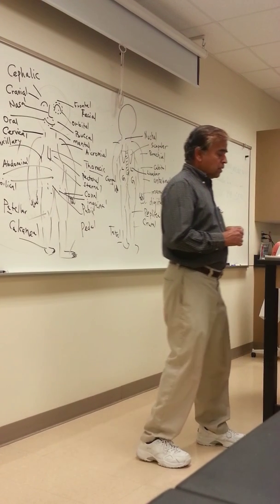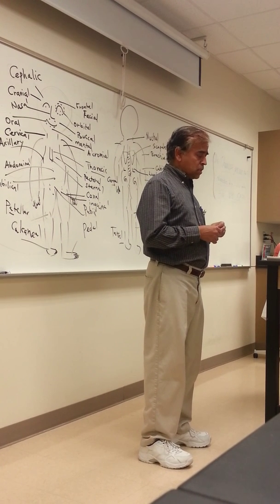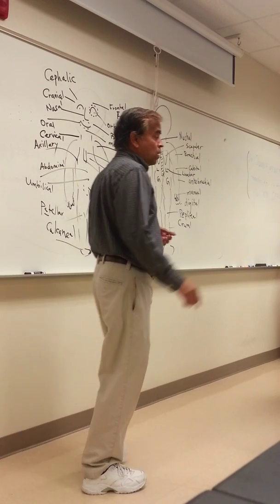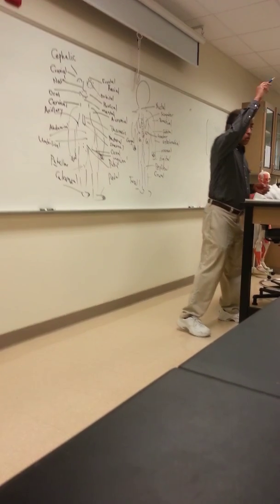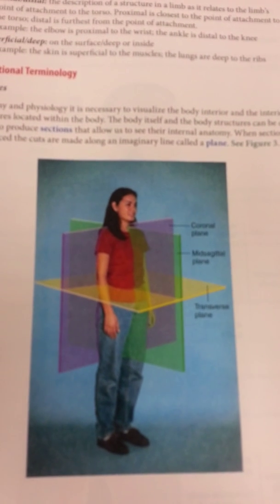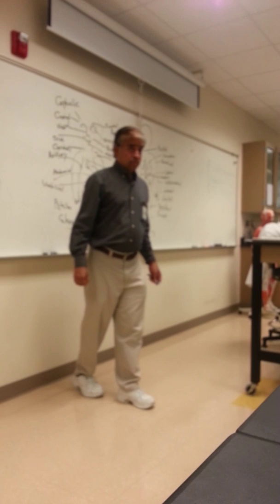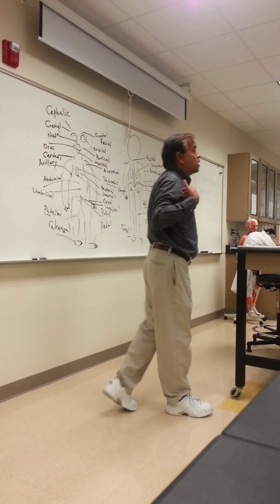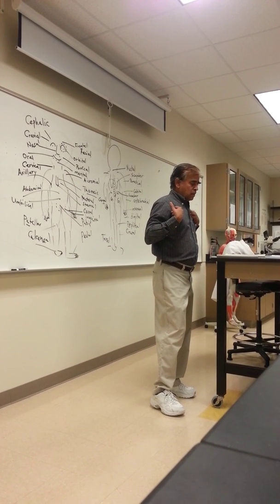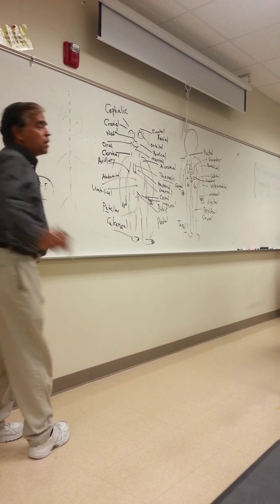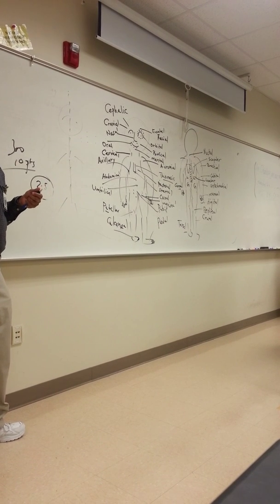You can see figure three — the lady standing in the standard anatomical position. You see the different color-shaded squares representing the different ways you can divide a body into three planes. If you have a line passing through the midline of the body, that is called the sagittal plane. The sagittal plane divides your body into equal right and left halves — specifically the mid-sagittal plane.